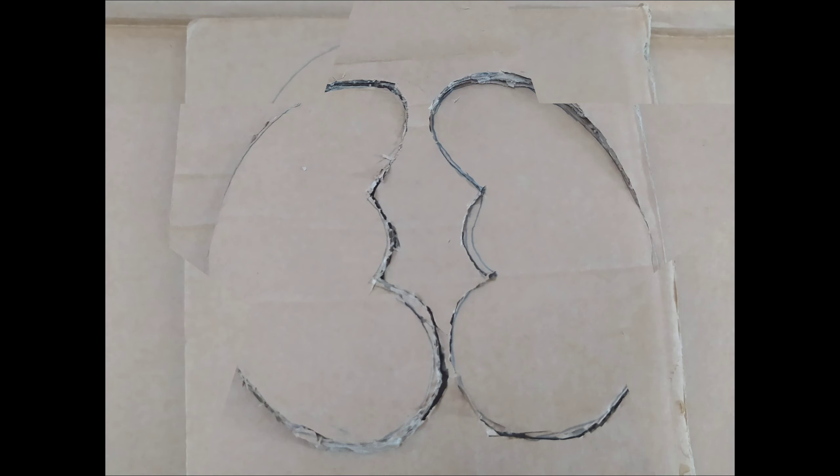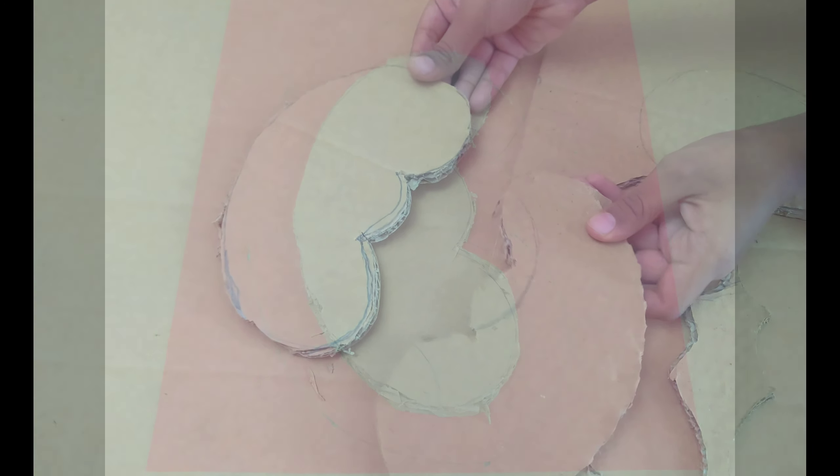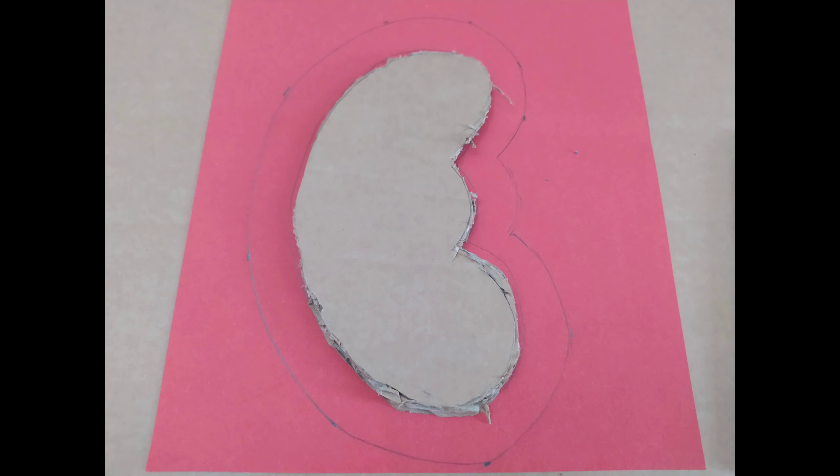First for the excretory system's parts, we'll start with the kidney. For that, you have to take a cardboard and draw two kidneys. Now cut both of the kidneys. That's how it looks like after cutting them. Here, I'm planning to give the kidney a dark red color.